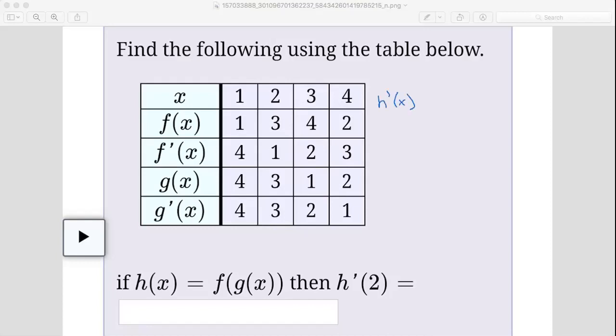The way we can find h prime of x, since my function h is a composite function, it has an outside function and an inside function, we have to use the chain rule.